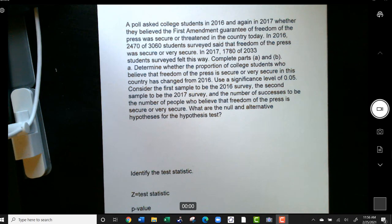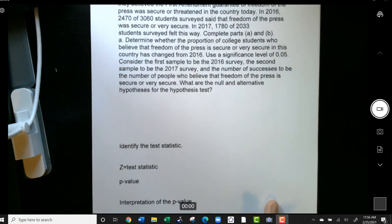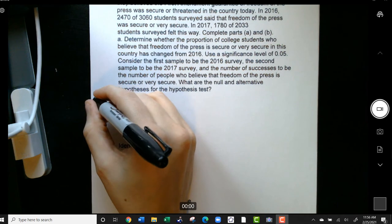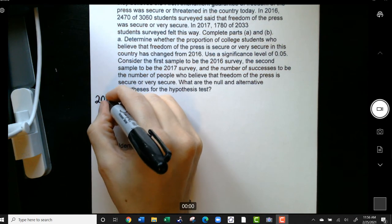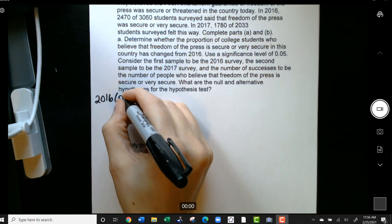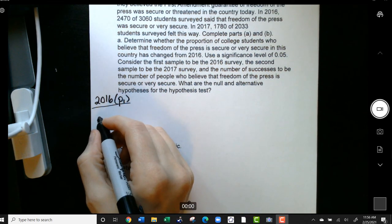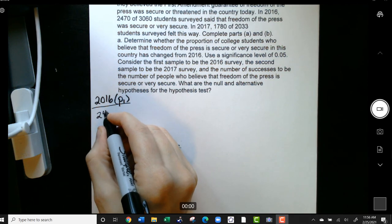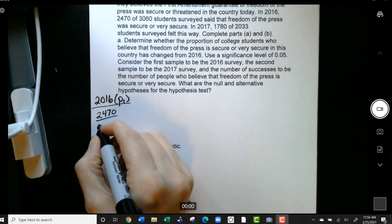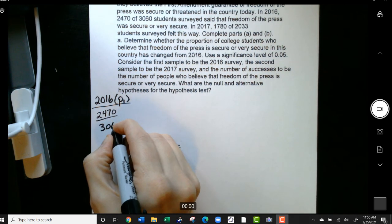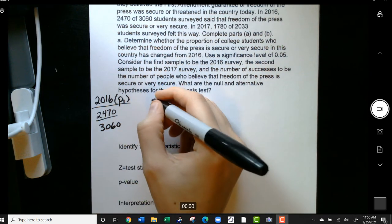So we want to complete the following and the first thing we want to do is set up a hypothesis test. We just want to know if the numbers between 2016 and 2017 are different. So here's the setup. In 2016, which I'm going to call Population 1, we saw 2,470 out of 3,060 have this opinion.